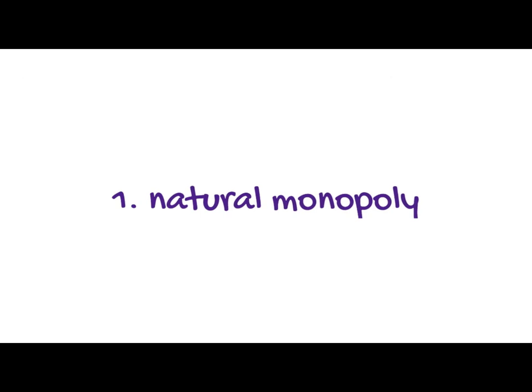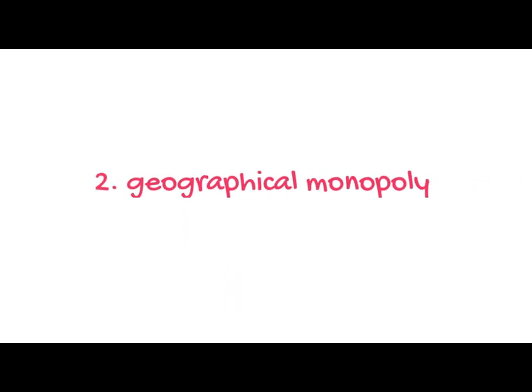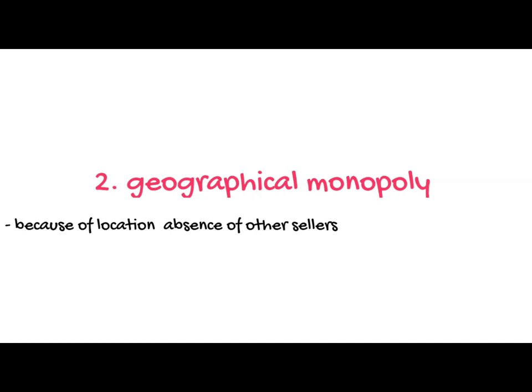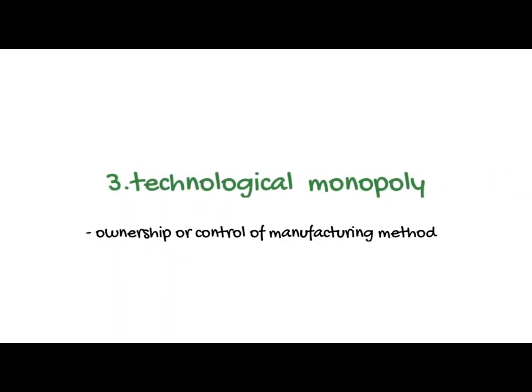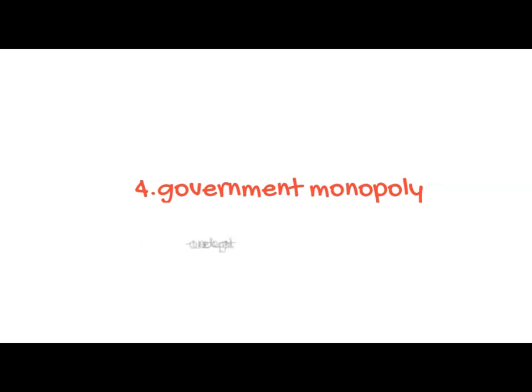One: natural monopoly is a market situation where it is most efficient for one business to make the product. Two: geographic monopoly is because of location and absence of other sellers. Three: technological monopoly is based on ownership or control of a manufacturing method, process, or other scientific advance. Four: government monopoly — a monopoly that the government owns and operates.